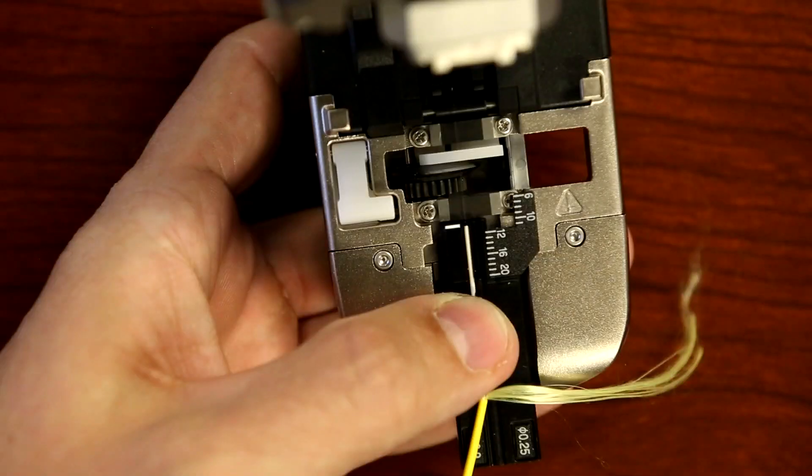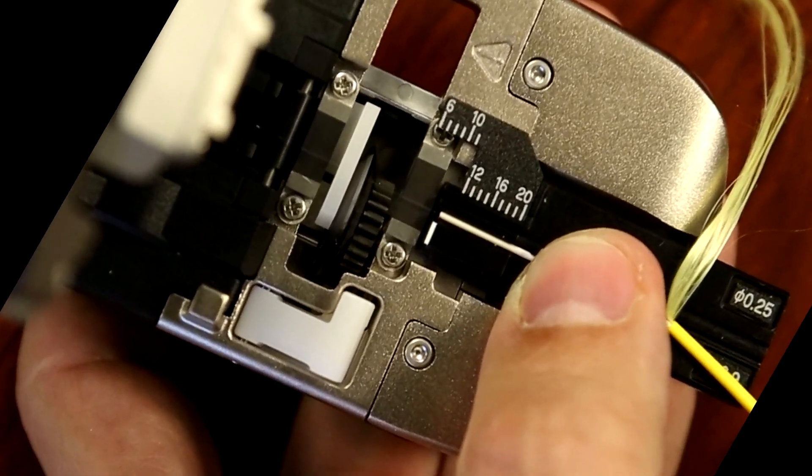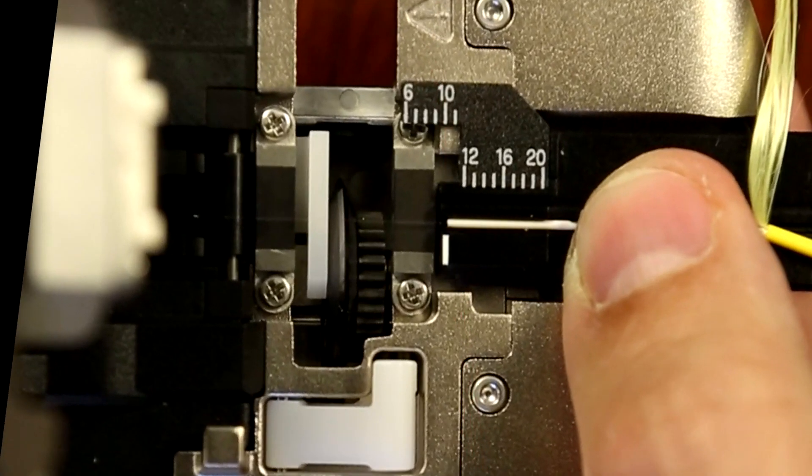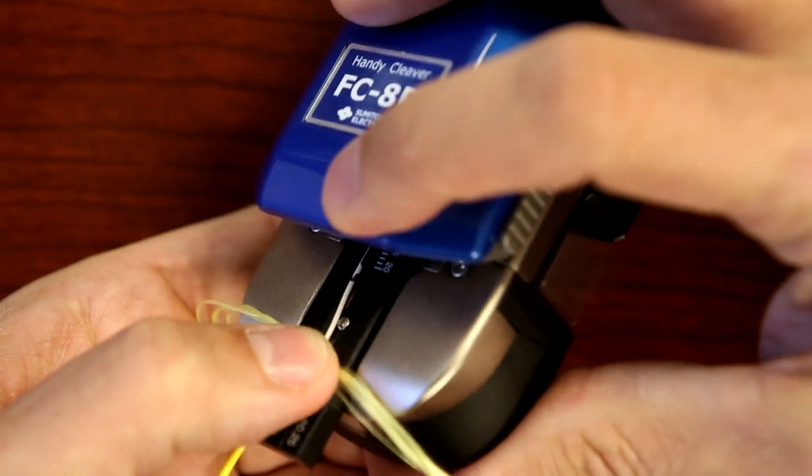Set the fiber onto the cleaver so that the coating's edge is between the 10mm and the 11mm marks. Now cleave the fiber.